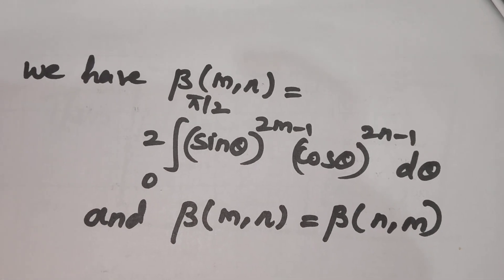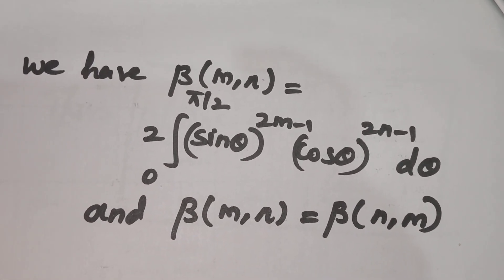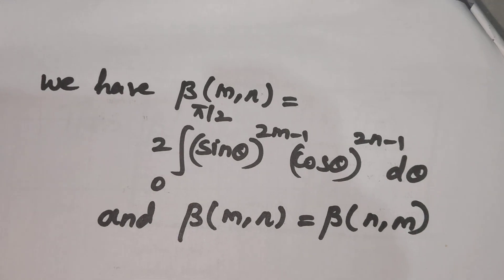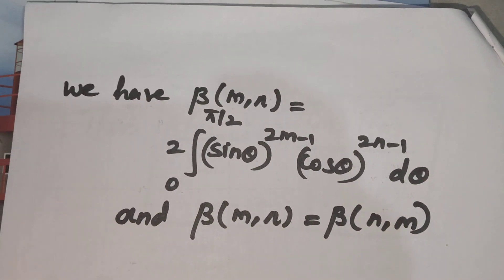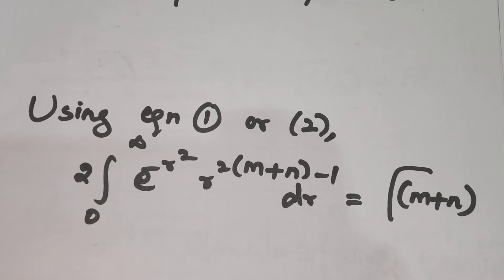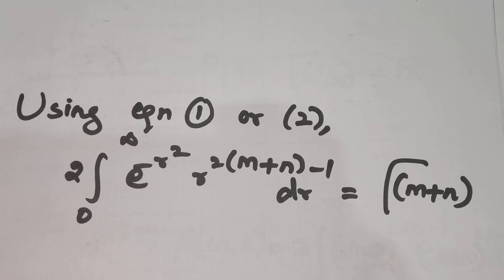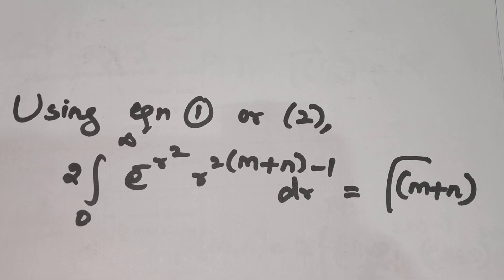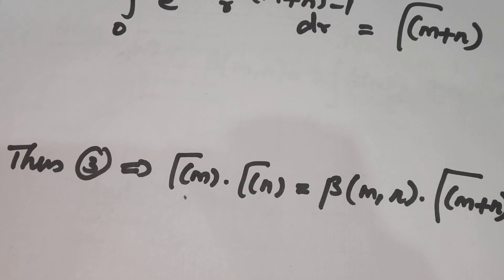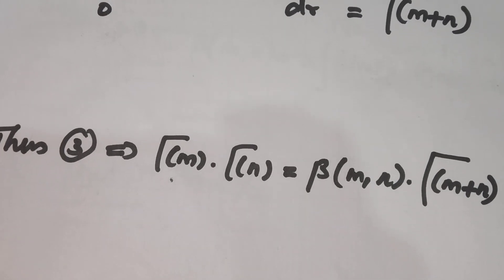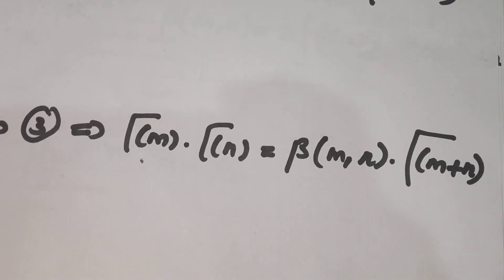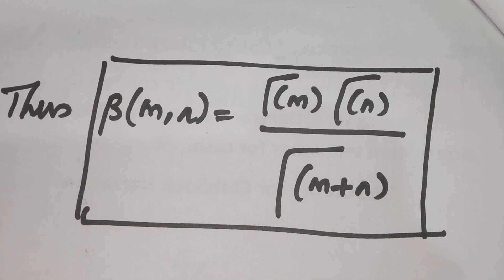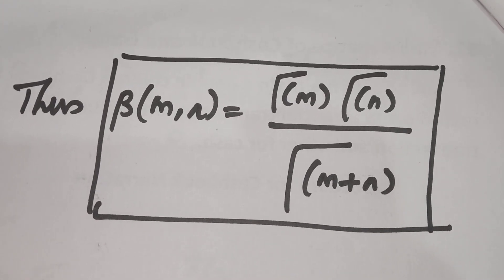We know that beta of (m,n) equals 2 times integral from 0 to pi by 2 of sin theta power 2m minus 1 cos theta power 2n minus 1 d theta, and beta(m,n) equals beta(n,m). Using these properties, 2 times integral from 0 to infinity of e power minus r square, r power 2(m+n) minus 1, dr equals gamma of m plus n. Therefore gamma of m into gamma of n equals beta(m,n) into gamma of m plus n, giving beta(m,n) equals gamma(m) into gamma(n) divided by gamma(m+n). This is the relation connecting beta and gamma functions.